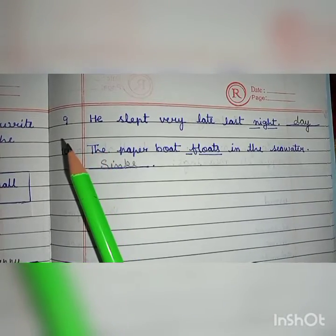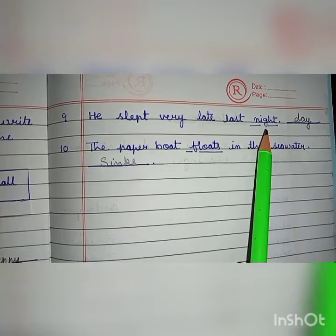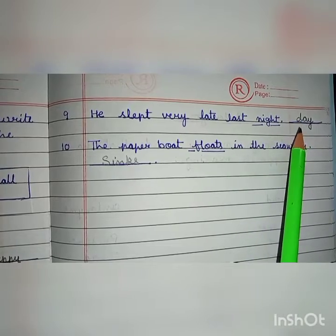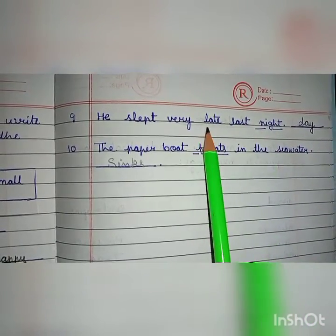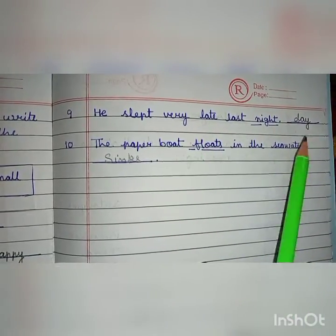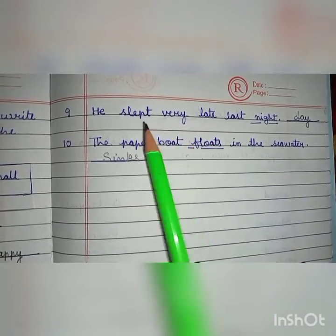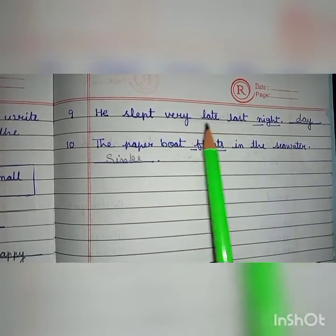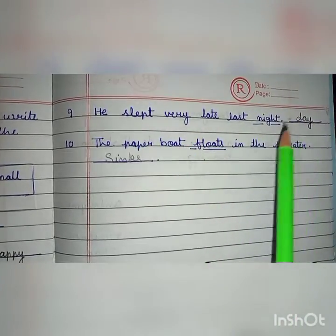Sentence number nine dekhiye: 'He slept very late last night.' Night ke niche underline hai, to yaha pe night ka opposite day ho jayega. Agar yaha pe night ke jagah late hota, to phir yaha pe kya hota? Yaha pe hota early. He slept very early last night. Late hai to early — late ka opposite bhi early hoga.